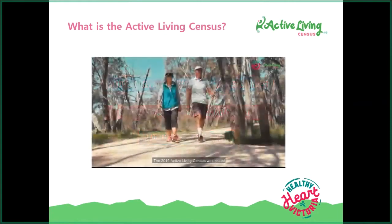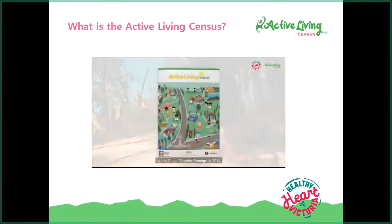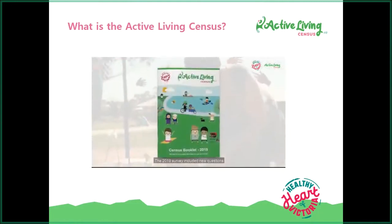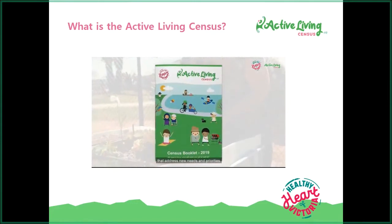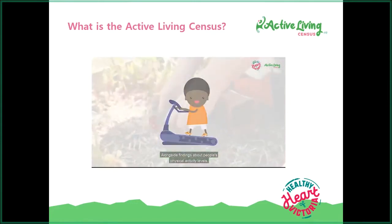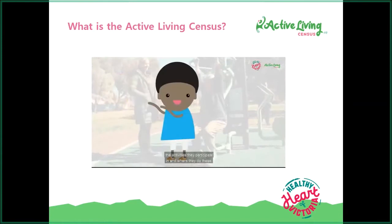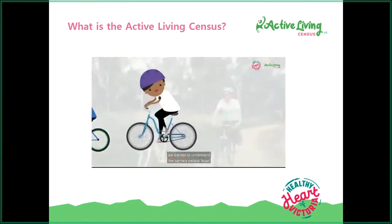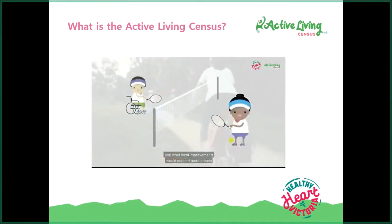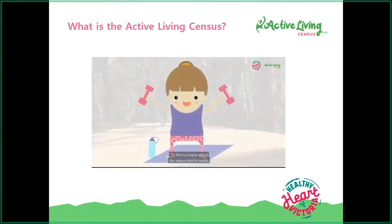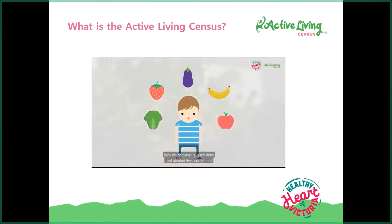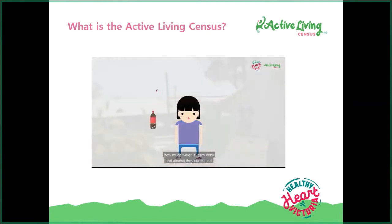The 2019 Active Living Census was based on a similar census undertaken by the City of Greater Bendigo in 2014, with new questions addressing new needs and priorities. Alongside findings about people's physical activity levels, the activities they participate in and where they do these, we wanted to understand the barriers people faced and what local improvements would support more people to be more active. To find out more about respondents' health, we asked about fruit and vegetable serves per day, water, sugary drink and alcohol consumption, whether they smoked, and whether they considered gambling a problem.